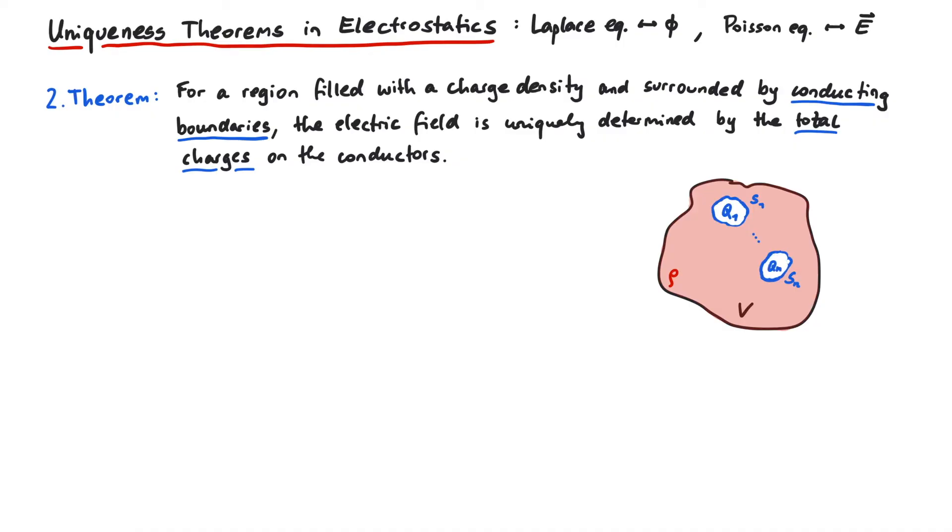We start by assuming that there are two different electric fields allowed in our volume. Each one fulfills the first Maxwell equation, and at each boundary, the integral version of the first Maxwell equation is fulfilled, where q is the total charge on the conductor.